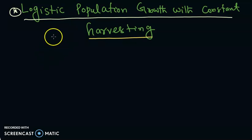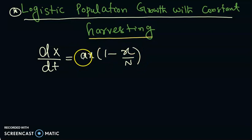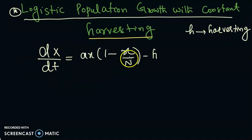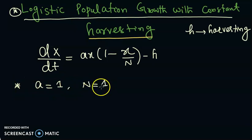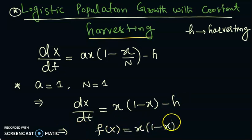Previously, our logistic population model was given by dx/dt = ax(1 - x/N), where a is some constant and N is the carrying capacity. This time we introduce a term minus h, where h is the so-called harvesting constant. For simplicity, let a = 1 and N = 1, giving the differential equation dx/dt = x(1 - x) - h, so f(x) = x(1 - x) - h.